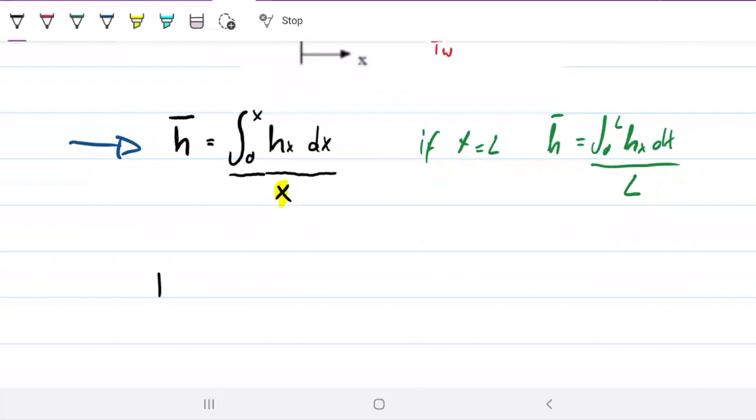Next, remember that Nusselt equals coefficient times characteristic length over k. In this case here, if we're doing for the whole plate, it will be L, but if we just want a specific point, this will be x, because Nusselt is going to vary according to the position we are on x.